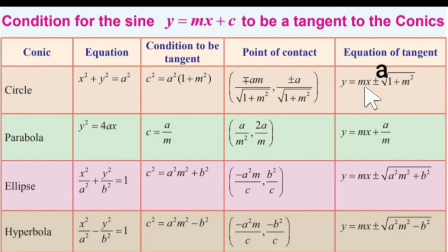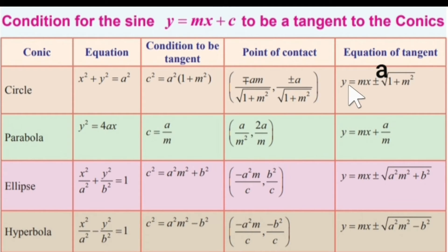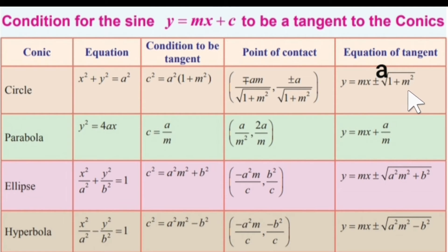The equation of the tangent to the circle is y equal to mx plus c. Instead of c, we substitute the value from the condition for tangency. Since c square equals a square into 1 plus m square, c equals plus or minus a into root of 1 plus m square. So the equation of the tangent becomes y equal to mx plus or minus a into root of 1 plus m square.